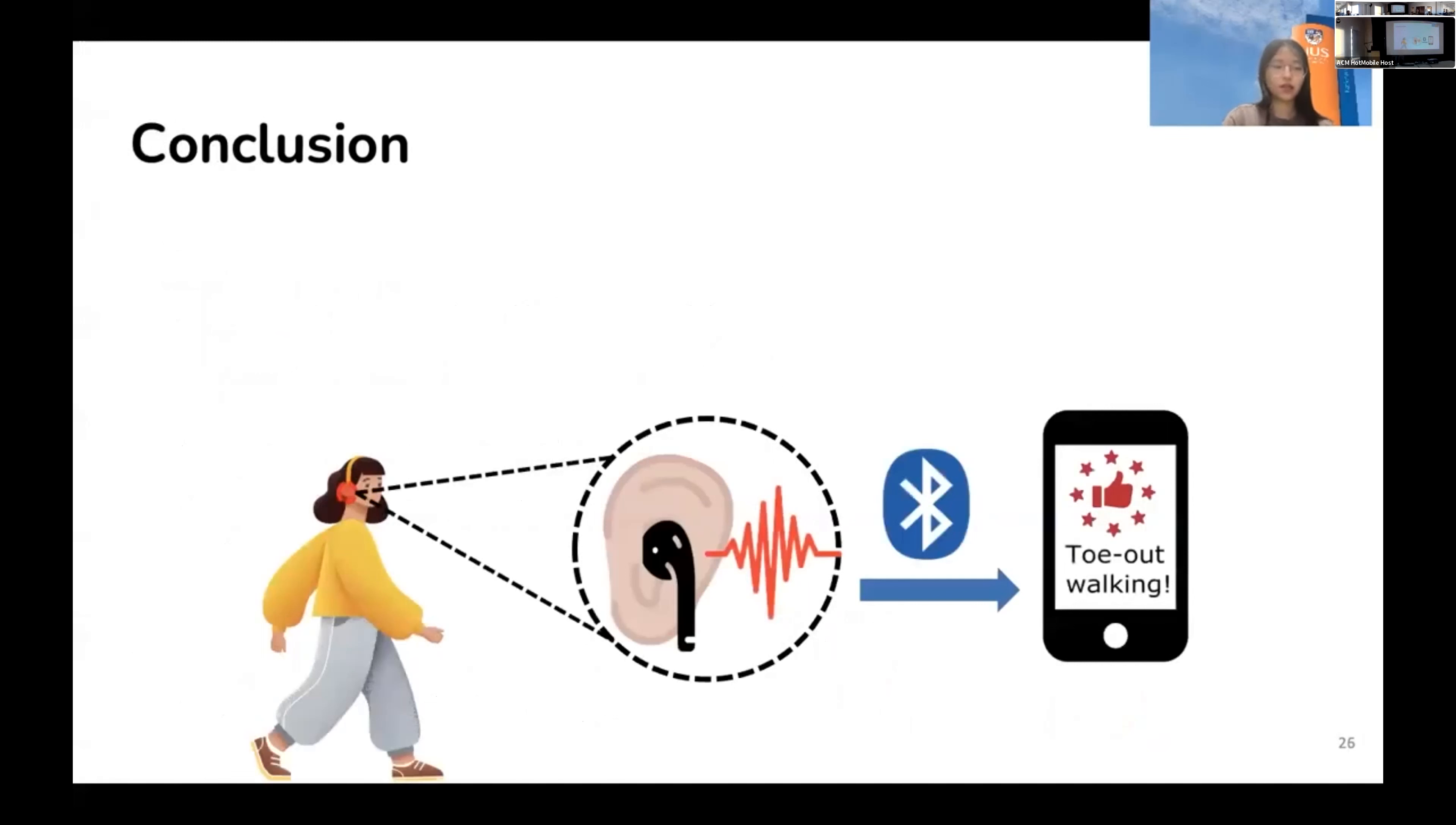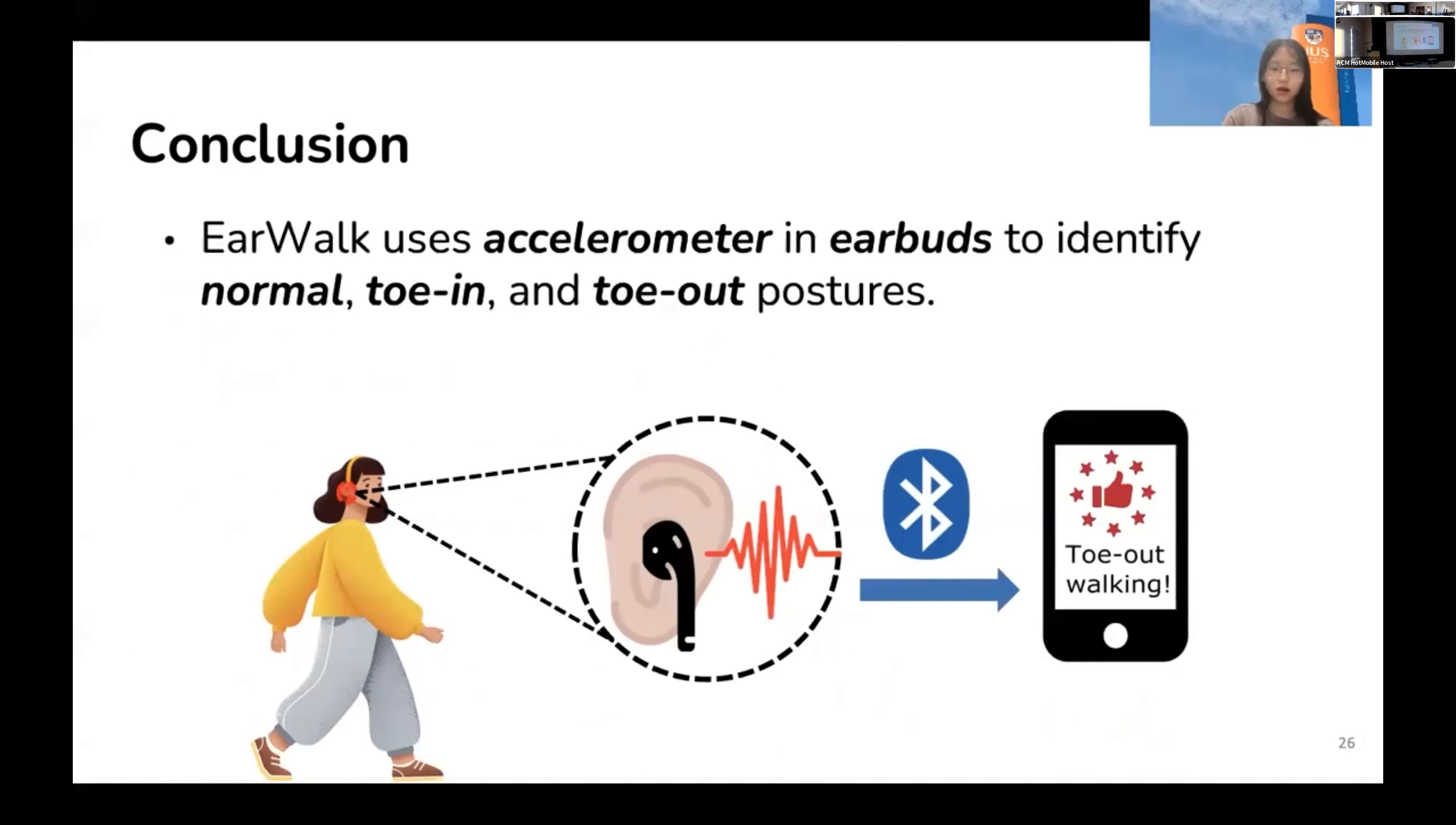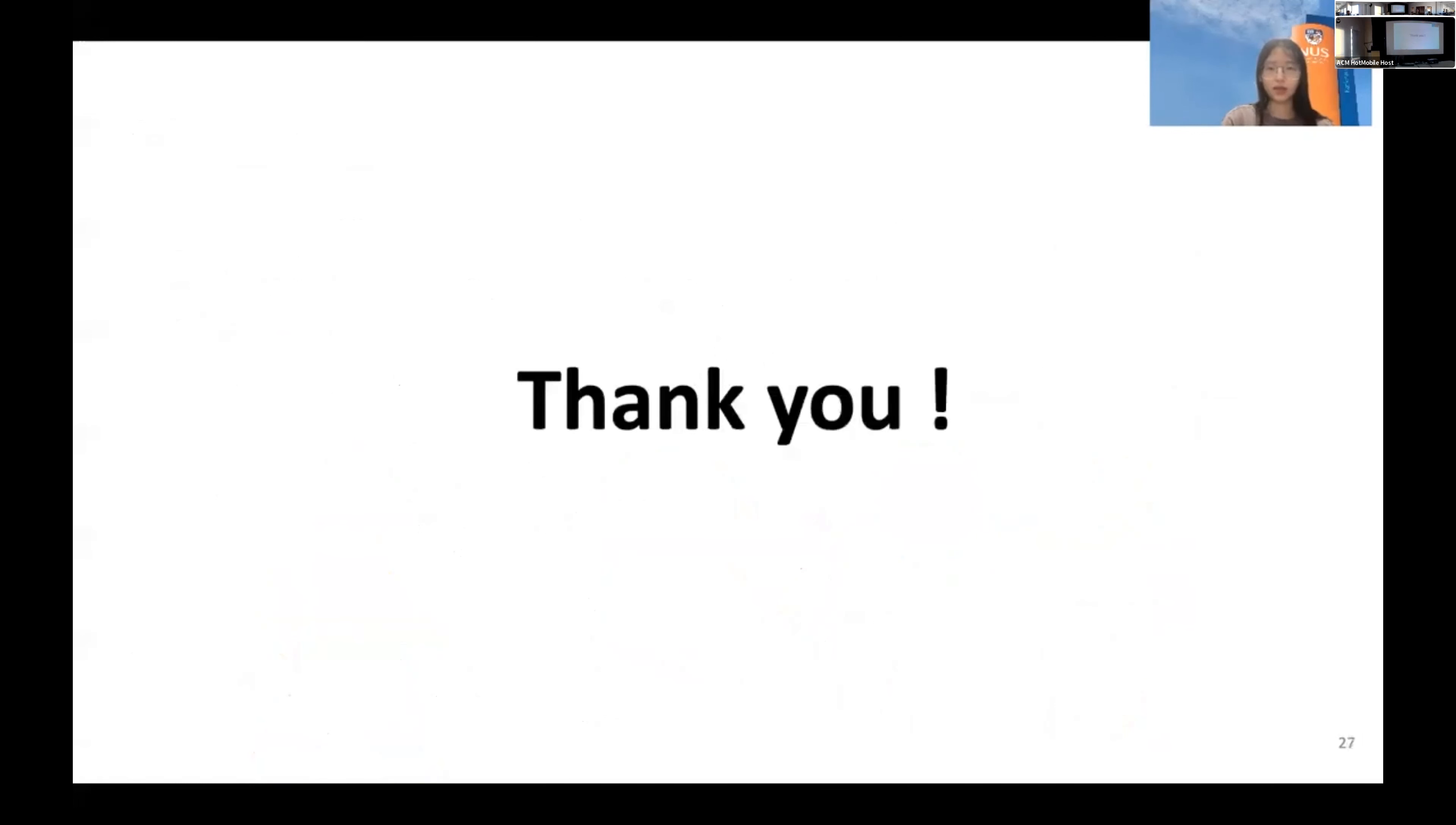So, in conclusion, EarWalk is a system that uses accelerometer on earbuds to identify normal, toe-in, and toe-out walking postures. We hope this work can inspire communities' research interest in more interesting or similar uses of commodity earbuds. Thank you for listening. I'm glad to answer any questions you may have.